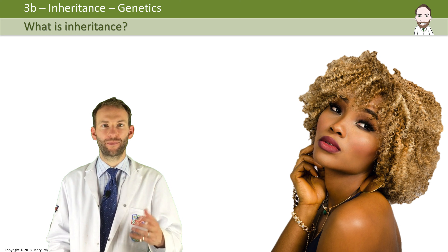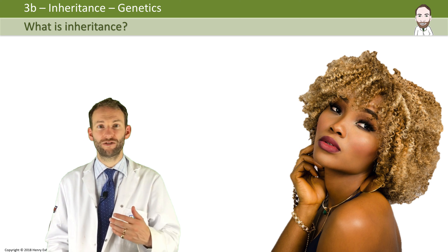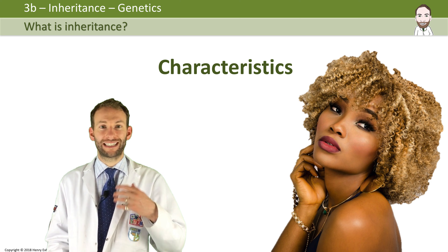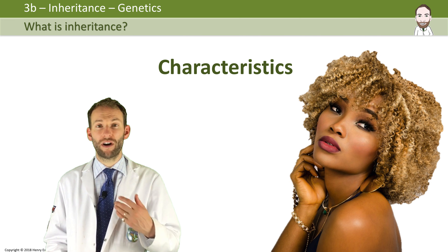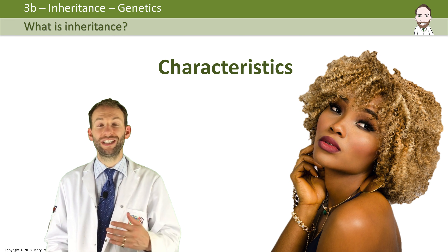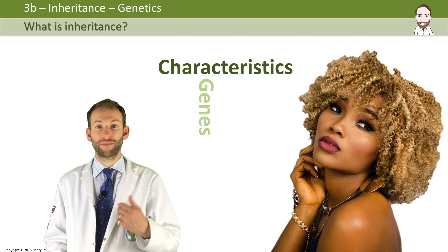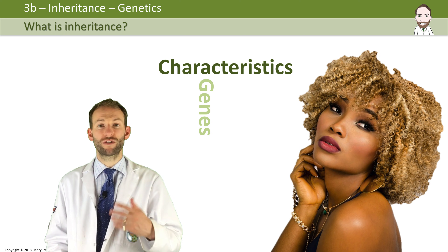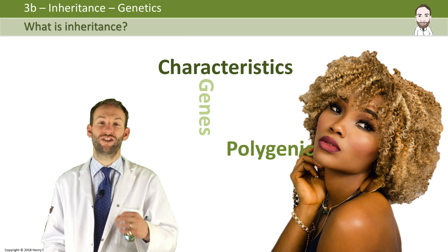What is inheritance? Inheritance is all about how characteristics like eye colour get passed on from one generation to the next. They get passed down in your genes from your parents. Some characteristics are controlled by a single gene, but most are controlled by many genes, or what we call polygenic interactions.